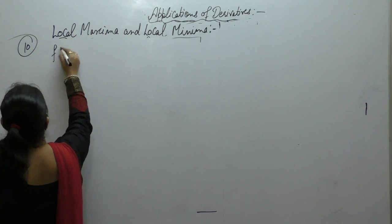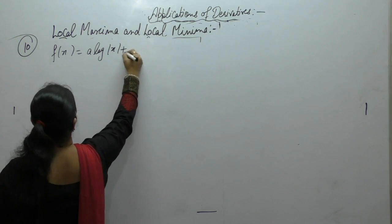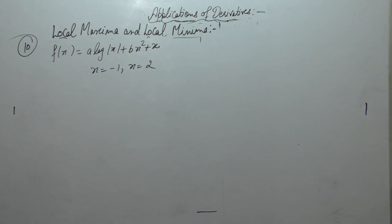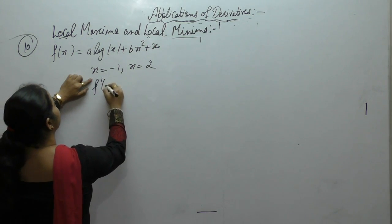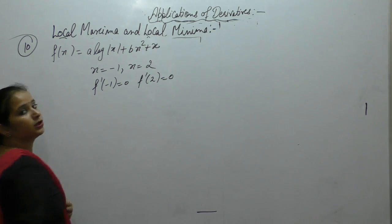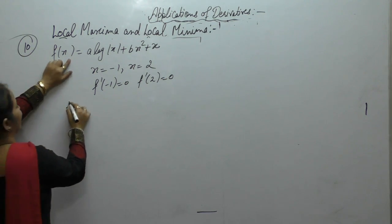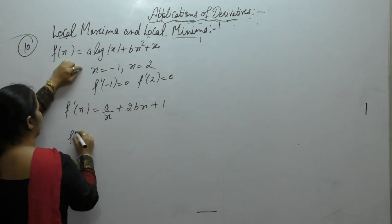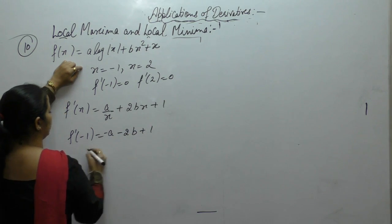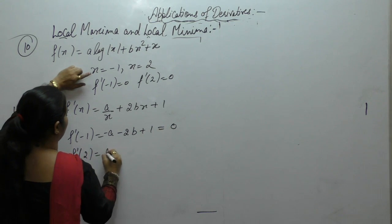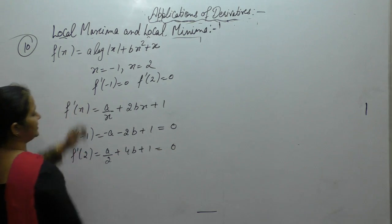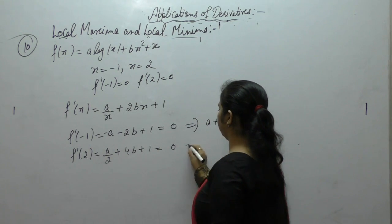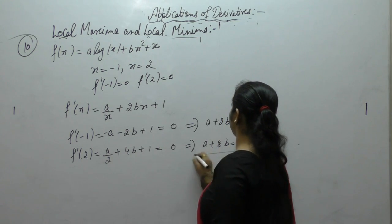If f of x equals a log of x plus bx square plus x has extreme values at x minus 1 and at x equals 2, then find a and b. If it has extreme values it means f dash minus 1 and f dash 2 that will be equal to 0. Find the derivative first. Derivative of log x, 2bx, derivative of x is 1. Now f dash minus 1: a upon minus 1 minus 2b plus 1. f dash 2: a upon 2, 2 into 2, 4b plus 1 equals 0. From here what we get: a plus 2b equals 1, a plus 8b minus 2. Solve these equations.